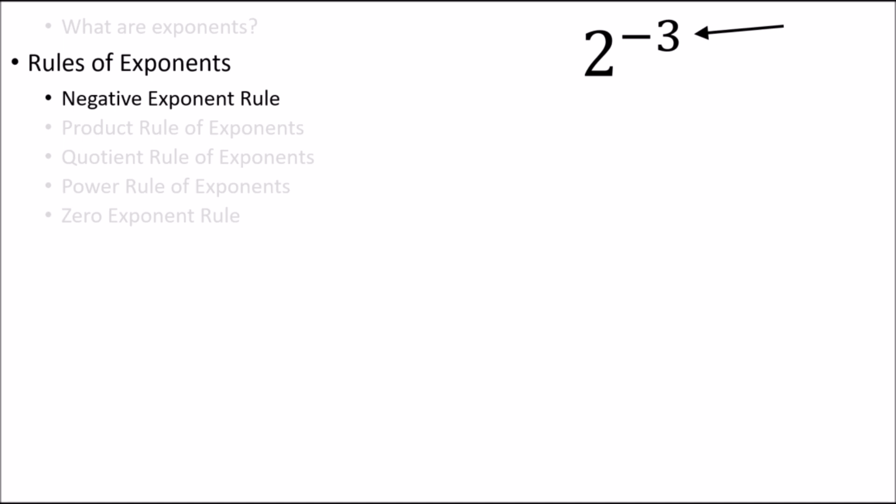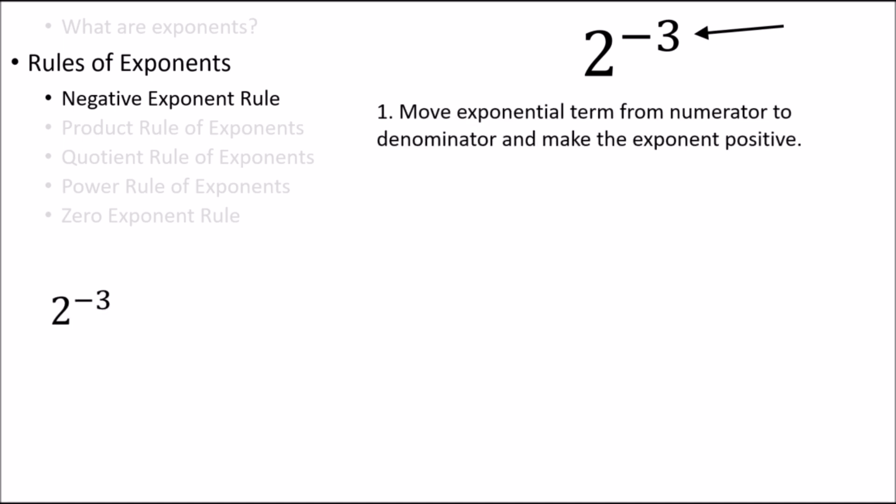The negative exponent rule can be applied in one of two ways. First, we can use it to move numbers from the numerator to the denominator of a fraction. For example, let's try to simplify 2 to the power of negative 3. Applying the negative exponent rule, we can move the exponential term from the numerator to the denominator and change the exponent to positive. So here we see that 2 to the negative 3 has the same value as 1 eighth.